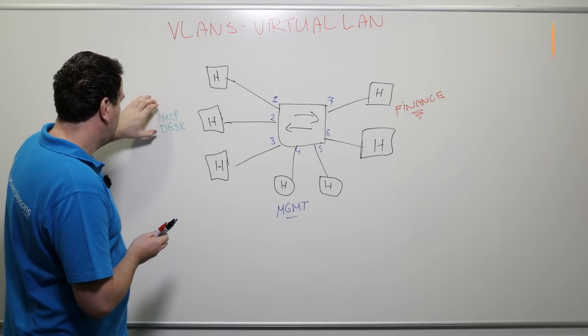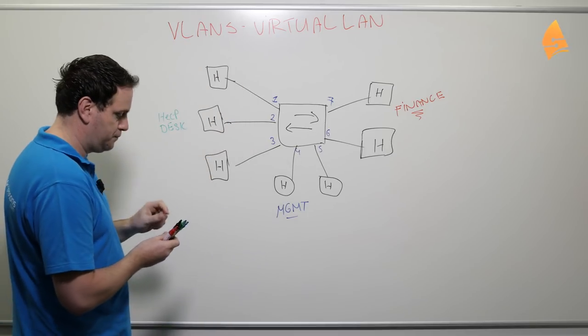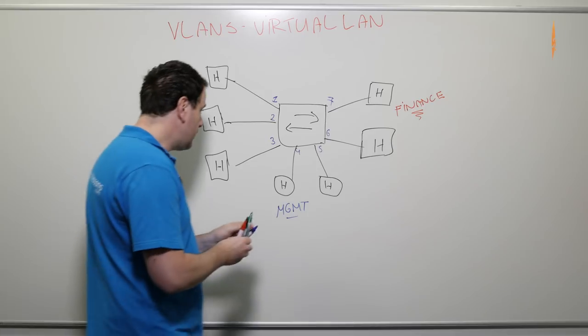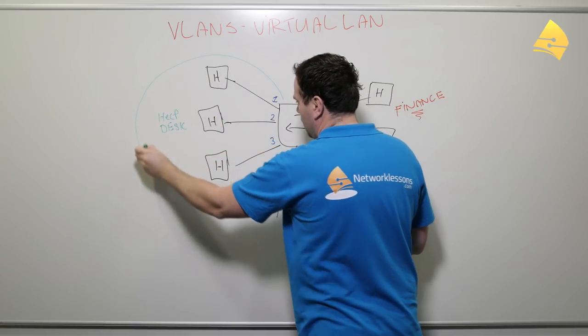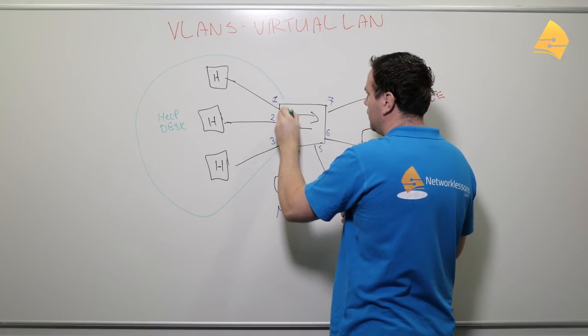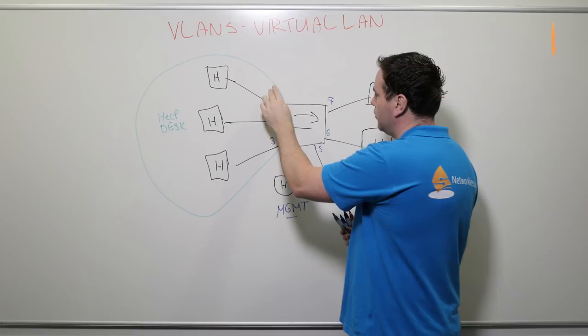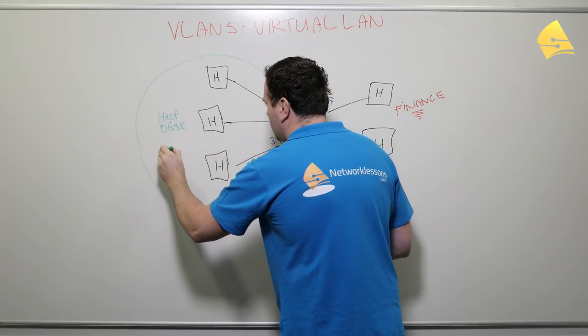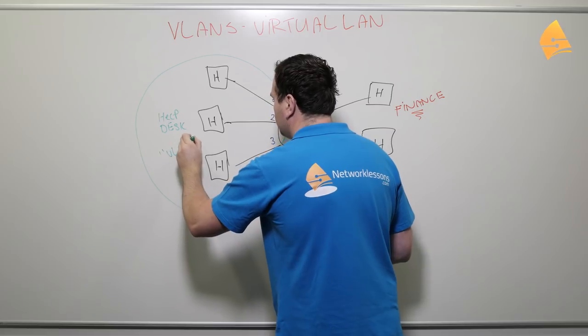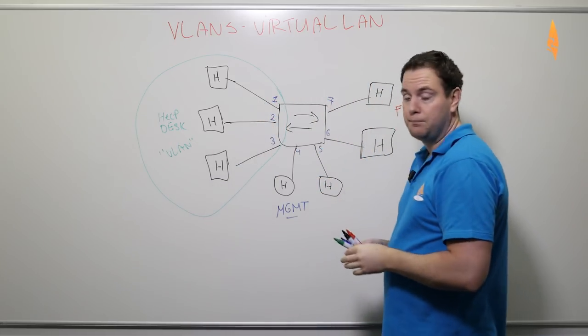Let's say we want to make sure that the helpdesk users over here, that they can only talk to each other. Now what we can do is we can create a VLAN and then we assign the interfaces to the VLAN. So this becomes our helpdesk VLAN and we put interfaces one, two and three into this VLAN.